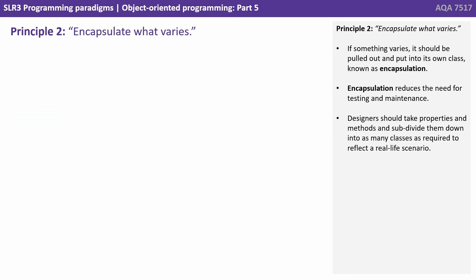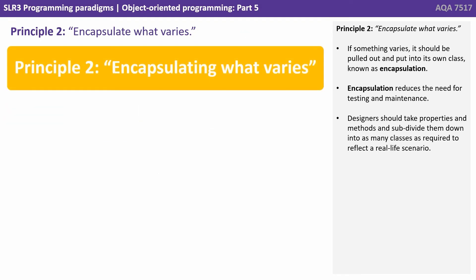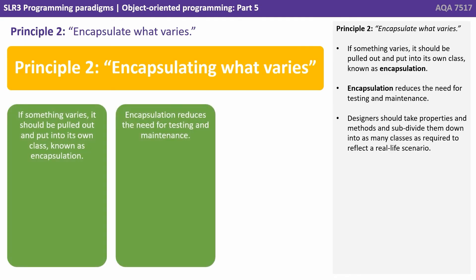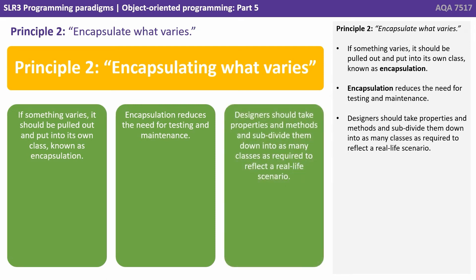Principle two: encapsulate what varies. If something varies, it should be pulled out and put into its own class — known as encapsulation. Encapsulation reduces the need for testing and maintenance. Designers should take properties and methods and subdivide them down into as many classes as required to reflect a real-world scenario.